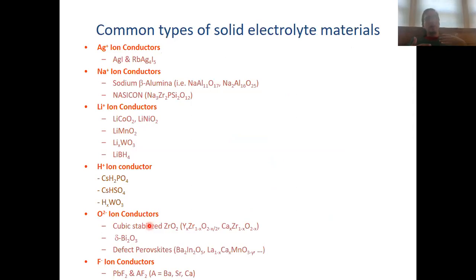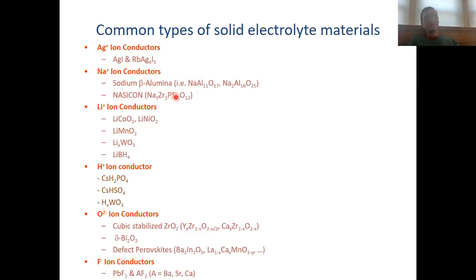What are common types of solid electrolyte materials and which ions do they typically conduct? We know silver-ion conductors — for instance, silver iodide or its ternary variant rubidium silver iodide. We also know sodium ion conductors, such as sodium beta-alumina, which is a sodium aluminum oxide, or NASICON, which is a sodium zirconium phosphorous silicon oxide.